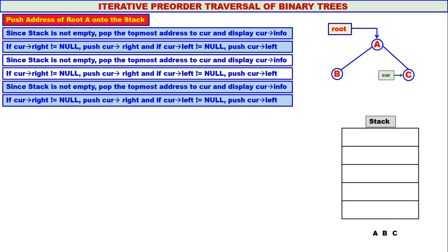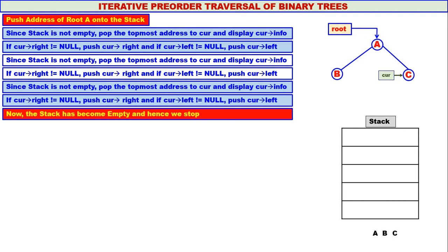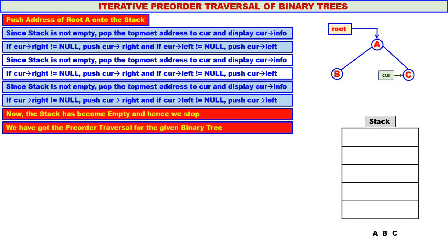Curr's right is equal to null, so no pushing. Curr's left is also equal to null, so no pushing. The stack becomes empty and we stop. Therefore, we have got the pre-order traversal for the given binary tree: A, B, C. Using iteration, we have got the pre-order traversal of the given binary tree.